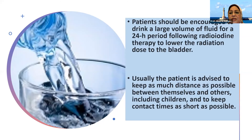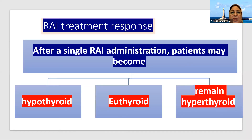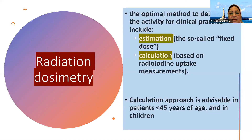Patients should be advised to keep as much distance as possible between themselves and others, including children, and to keep contact times as short as possible. The radioiodine treatment response includes: after a single radioiodine administration, the patient may become either hypothyroid, euthyroid, or remain hyperthyroid. Radiation dosimetry includes estimation methods (the fixed dose) and calculation methods based on the radioiodine uptake measurement. The calculation approach is advisable in patients less than 45 years of age and in children.